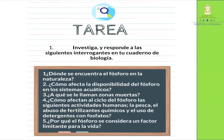Tarea: investiga y responde a las siguientes interrogantes en tu cuaderno de biología. 1. ¿Dónde se encuentra el fósforo en la naturaleza? 2. ¿Cómo afecta la disponibilidad del fósforo en los ecosistemas acuáticos? 3. ¿A qué se le llaman zonas muertas? 4. ¿Cómo afecta al ciclo del fósforo las siguientes actividades humanas: la pesca, el abuso de fertilizantes químicos y el uso de detergentes con fosfato? 5. ¿Por qué el fósforo se considera un factor limitante para la vida? Y recuerda, te queremos estudiando en casa. Hasta la próxima.